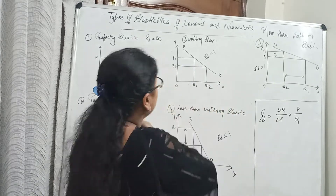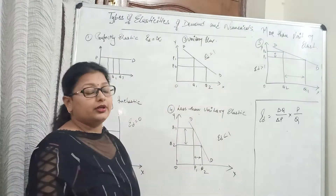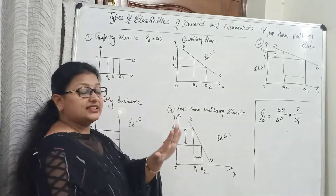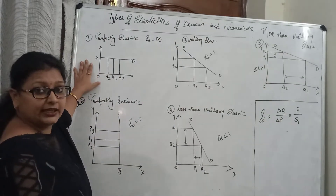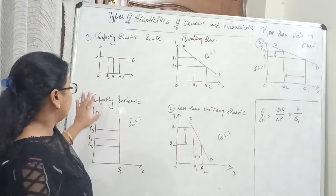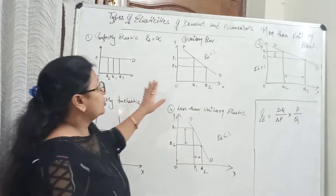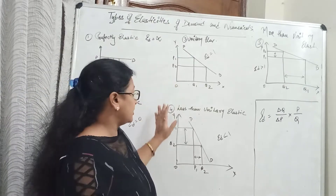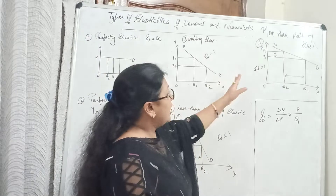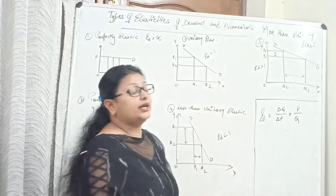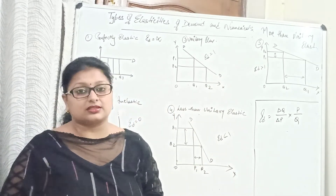I have made 5 diagrams of elasticity of demand. There are 5 cases: Number 1 is when demand is perfectly elastic; Number 2 is when demand is perfectly inelastic; Number 3 is when it is unitary elastic; Number 4 is when it is less than unitary elastic; and Number 5 is when it is more than unitary elastic.